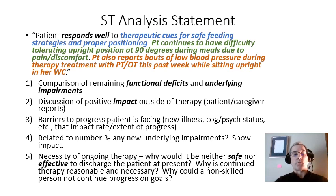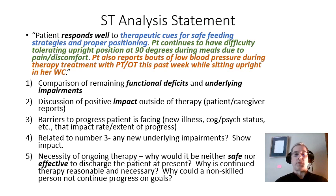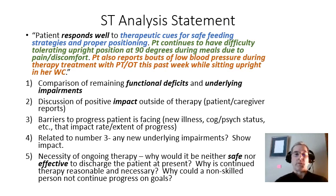Number three: barriers to progress the patient is now facing. Pain is clearly outlined as a barrier, but it's not objectified, so that barrier is not well identified. Equally important: what is speech therapy doing about it? How is the therapist, within their scope of practice, treating this concern and addressing this problem? Number four: are there any new underlying impairments? We do know the patient is having blood pressure issues, but we don't know whether there's a functional impact.